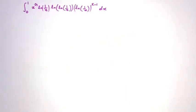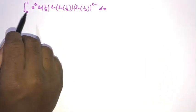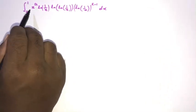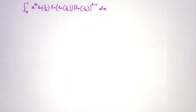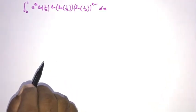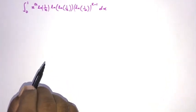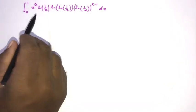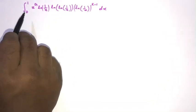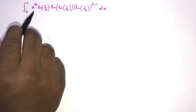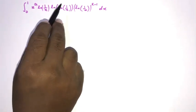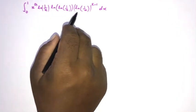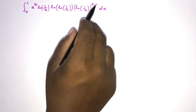Hello everyone, welcome to the Mathematics and My channel. In this video we are going to solve this interesting integral: the integral from 0 to 1 of x raised to g — where g is the Catalan constant — times natural log of 1 over x, times natural log of natural log of 1 over x, times natural log of 1 over x raised to the pi minus 1.